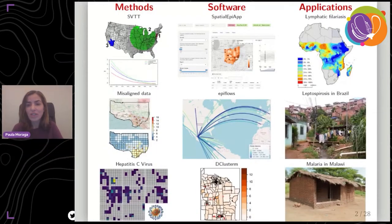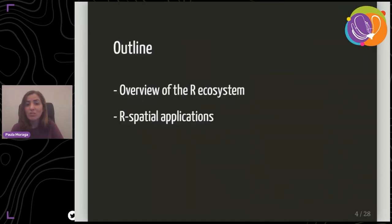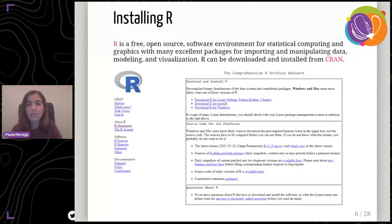I'm Paula Moraga, assistant professor of statistics at KAUST. My work focuses on the development of statistical methods and computational tools for geospatial data analysis and health surveillance. I'm the author of the book 'Geospatial Health Data: Modeling and Visualization with R-INLA and Shiny.' Today I'll give an overview of the R ecosystem and then talk about R-Spatial applications.